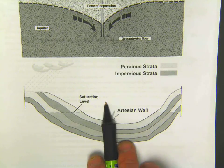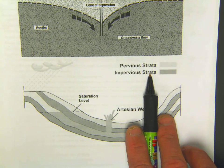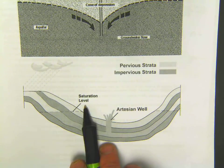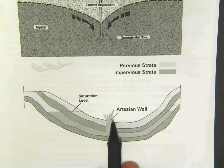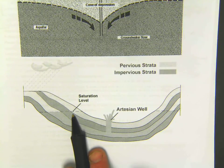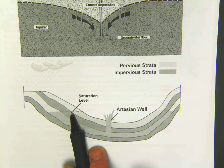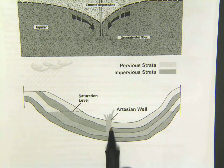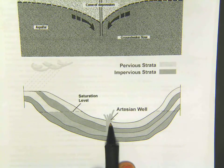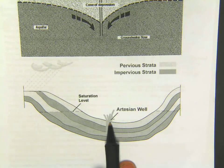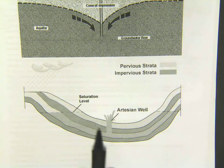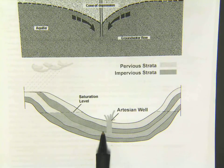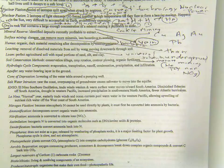The strata shown here basically means layers. This shows what an artesian well is, located in a hill where the saturation level of the water is higher than where the water is taken out. An artesian well basically means you've got enough head pressure so you don't really need to pump the water — it just comes out naturally.